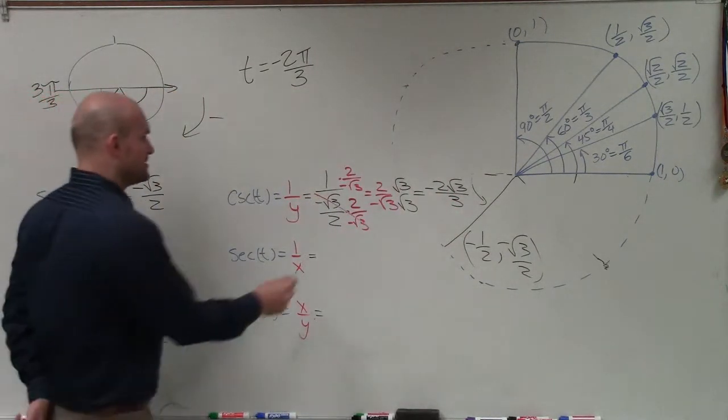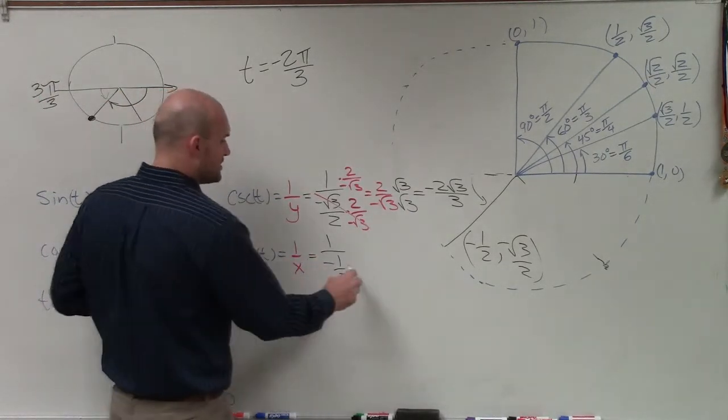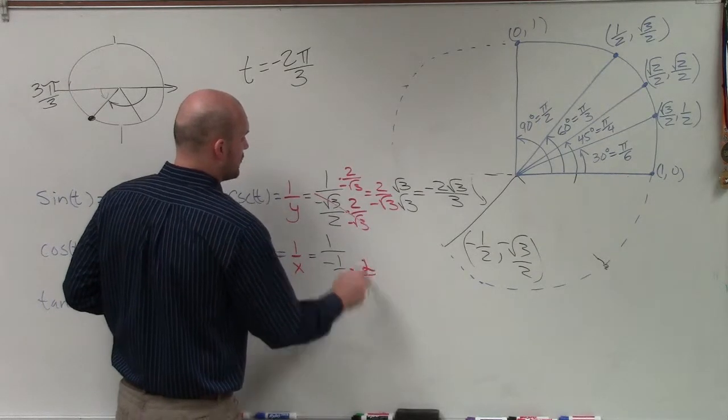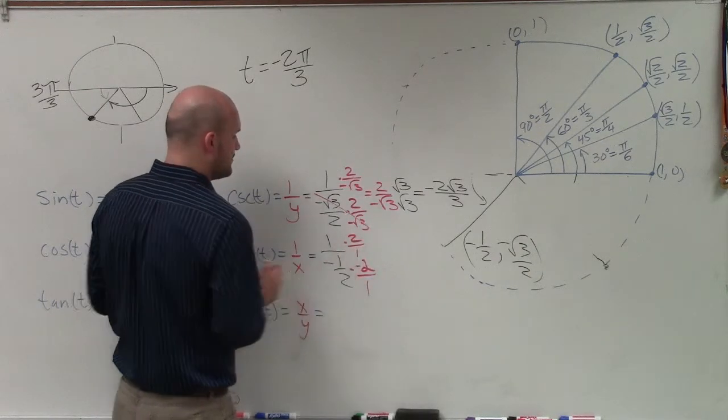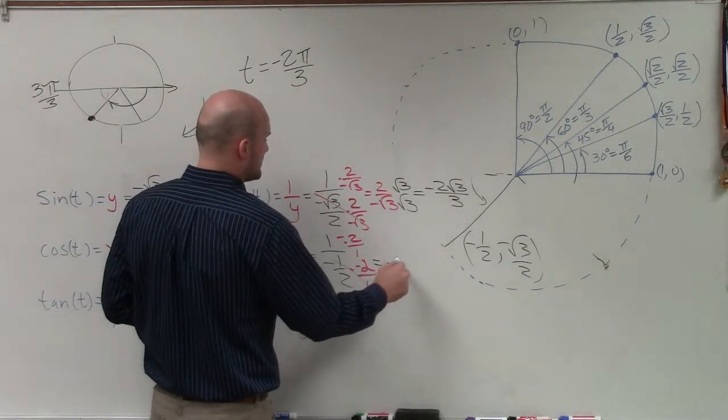Moving on to secant. That's going to be 1 over negative 1 half. If you want to multiply by the reciprocal, that would be negative 2 over 1 times negative 2 over 1. So therefore, that again, multiplies the 1. And we're just left with a negative 2.